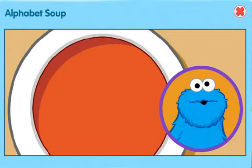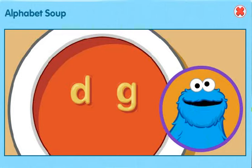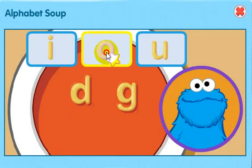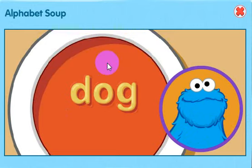Oh, look at that delicious bowl of soup. Nom, nom, nom. Me see two letters there. But the word is missing an important middle letter noodle. You choose the middle sound for the word. Move the little star to the letter sound you want and click. O makes the AH sound. That the word: dog. Me told you noodles make words!